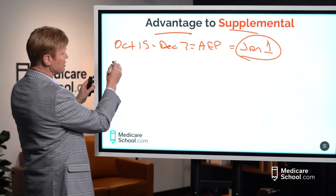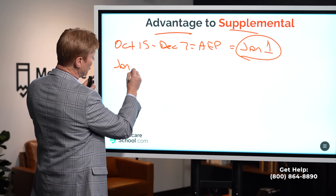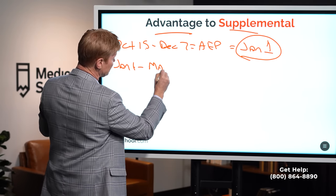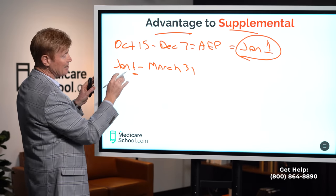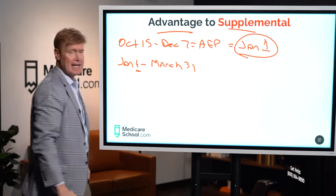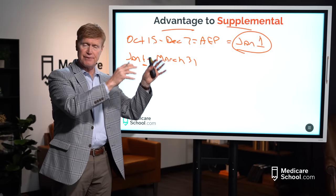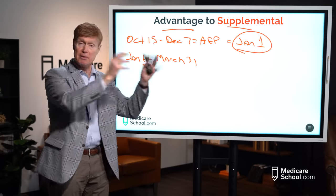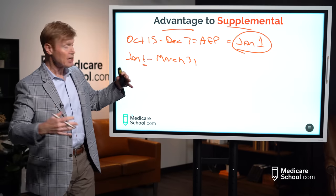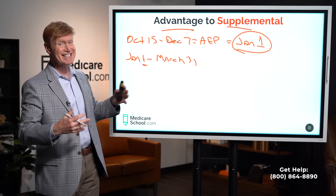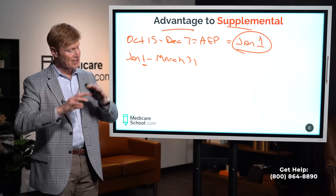The same applies from January 1 through March 31st — as long as you have an advantage plan on January 1, you can switch to a supplemental plan. If you switch in January, the supplemental plan starts in February; February switch means March start; March switch means April start. We are restricted to these timeframes, and beyond them, it's simply not possible.